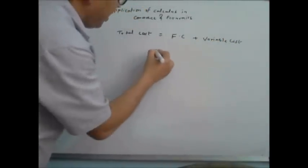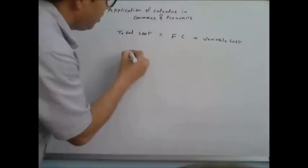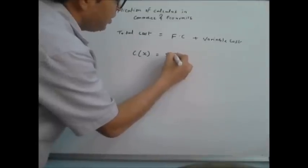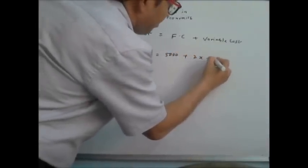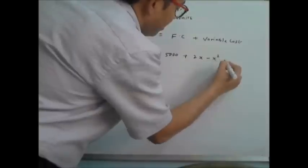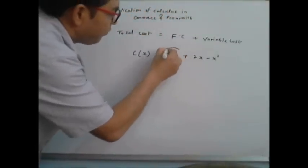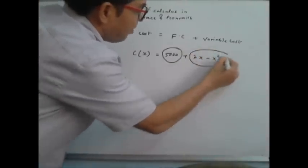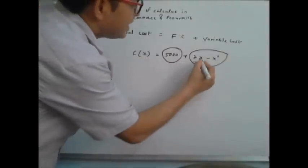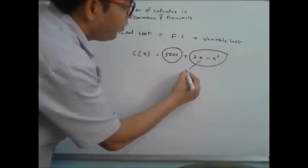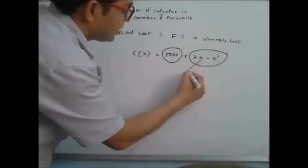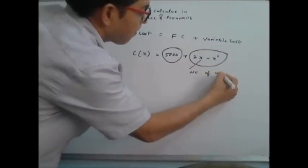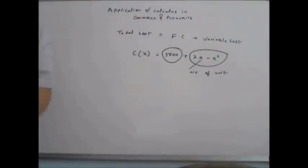If I am just writing the cost function, that is 5000 plus 2x minus x squared. Here the fixed cost is 5000, and this is the variable cost — the cost which is depending on number of units sold or purchased. Here x is the number of units, number of items. This is the cost function.